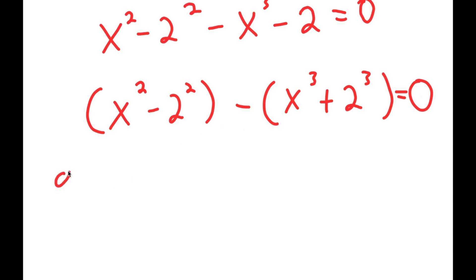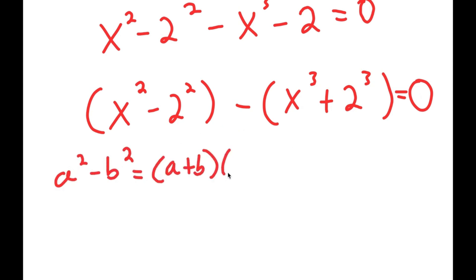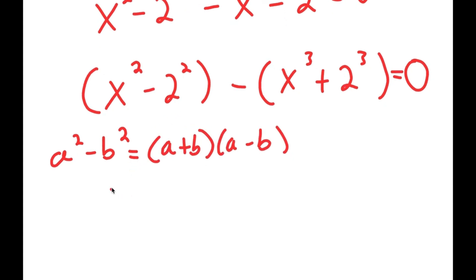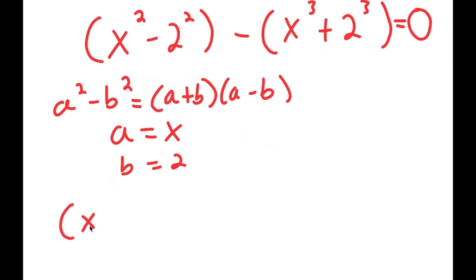Now, if I have something in the form a squared minus b squared, this is equal to a plus b times a minus b. In this case, a is x and b is 2, so I get x plus 2 times x minus 2.